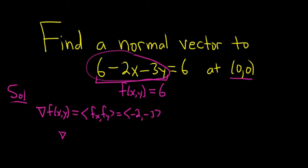So at 0, 0, it's exactly the same. So the normal vector would be negative 2, negative 3.